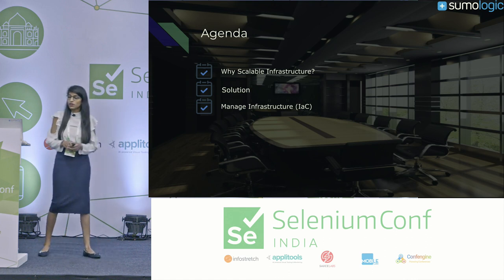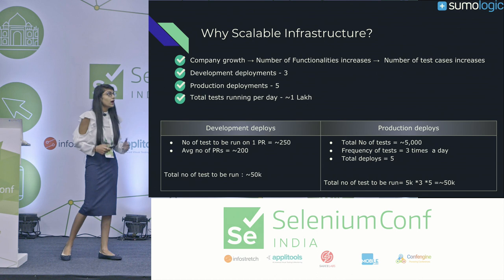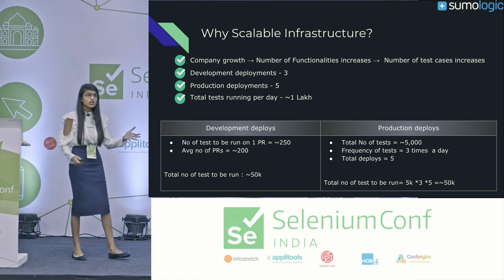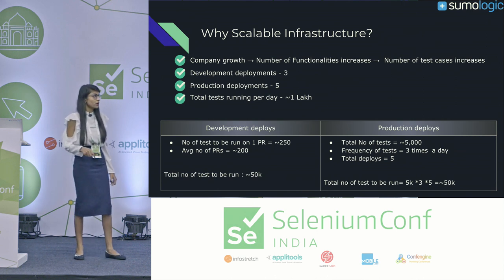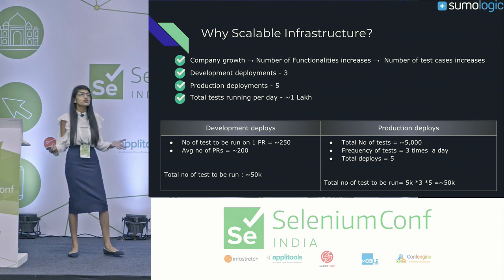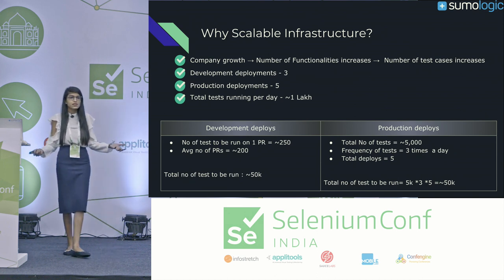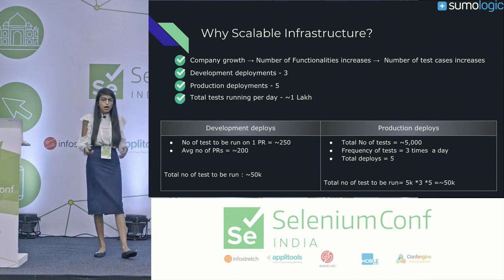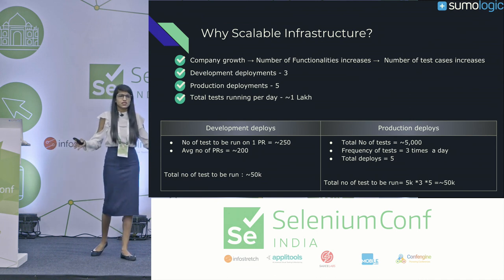In the era of continuous integration and continuous testing, as the company grows, the number of features will increase, and accordingly the number of test cases will increase exponentially. Making sure that every change will not introduce any regression is extremely important. The solution is to run automation — run appropriate test cases around the impacted area so we do not need to run our whole suite of large number of test cases with every change.